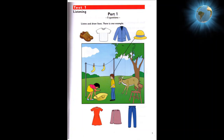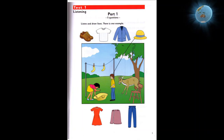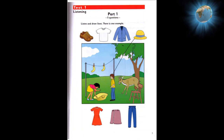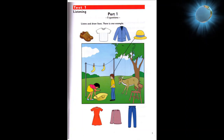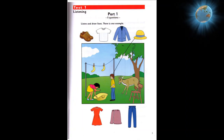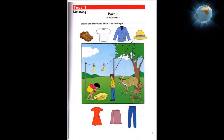Now you listen and draw lines. One. Put the shoes in the tree. Put the shoes where? In the tree. Okay.